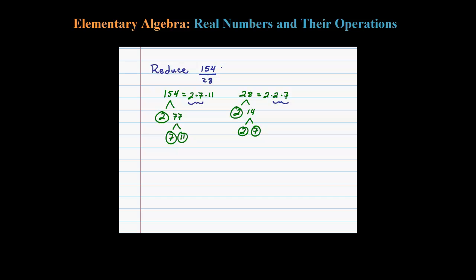Now dividing both numerator and denominator here by the GCF will allow me to reduce this fraction. So 154 divided by 14 will leave me with an 11. 28 divided by 14 is 2.